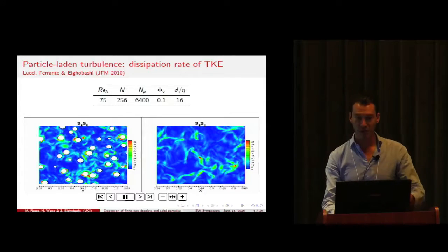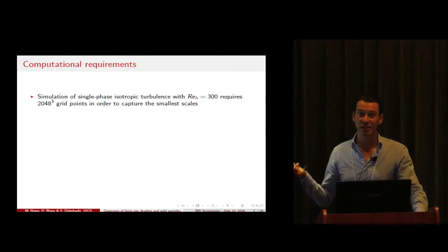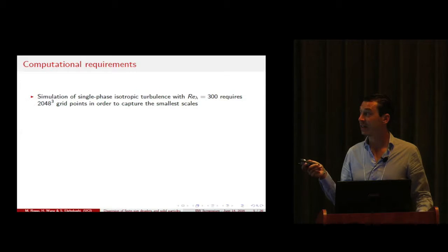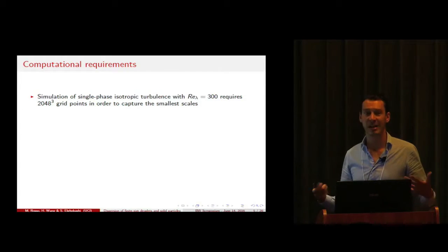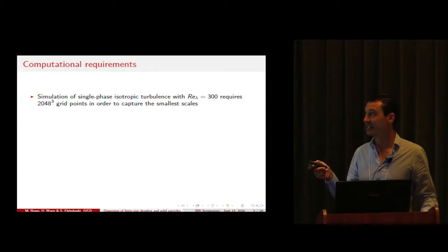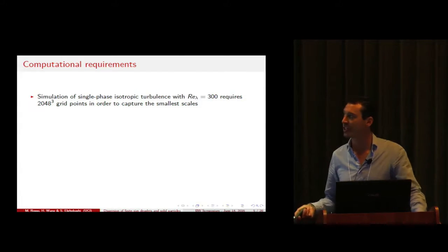Before showing the mathematical models and the numerical method, some consideration of the computational requirements are needed. Single-phase isotropic turbulence is very demanding for a numerical simulation. For example, if we have a turbulence with Reynolds lambda of 300, in order to solve the smaller scales we need at least 2048 cubed grid points.